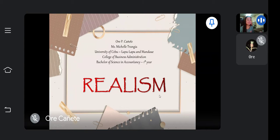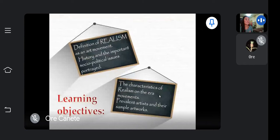Good day everyone. I, Ori P. Cañete, for this day will be discussing one of the art movements — to be exact, it is about realism. At the end of the discussion, each are expected to know the definition of realism as an art movement. Second, the history and the important socio-political issues portrayed. Third, the characteristics of realism as an art movement. And lastly, the prevalent artists and their sample artworks.